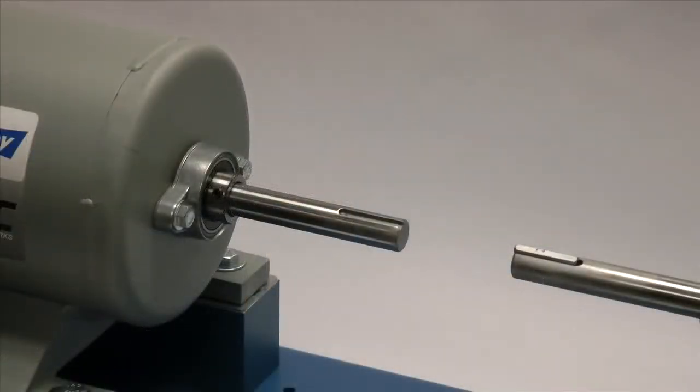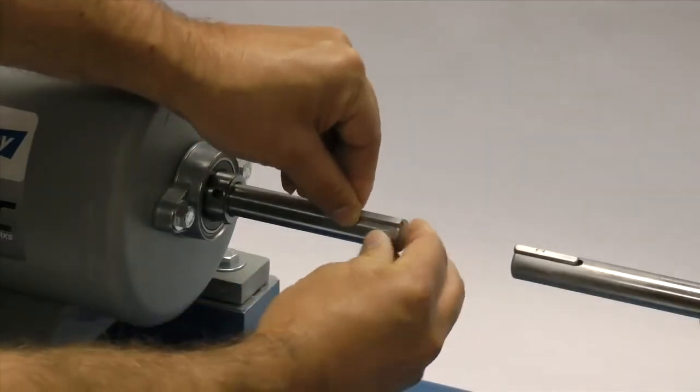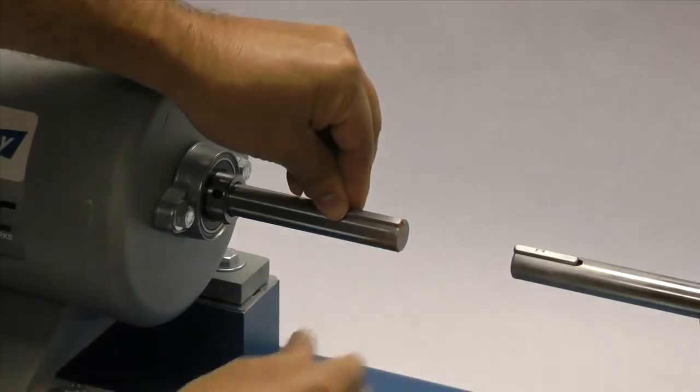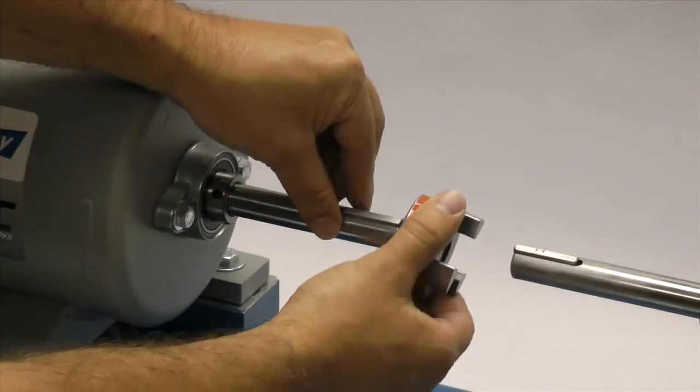Before installing the hub, place the key in the keyway on the shaft. The key should fit snugly into the keyway with no side-to-side movement. The end of the key should line up with both the end of the shaft and the hub.